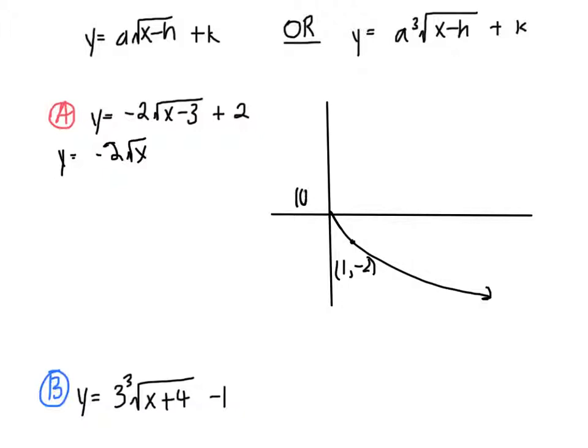And again this graph is not to scale. 1, negative 2, 0, 0. And then we're going to translate it to y equals negative 2 times the square root of x minus 3 plus 2. So we have h equals 3 and k equals 2.